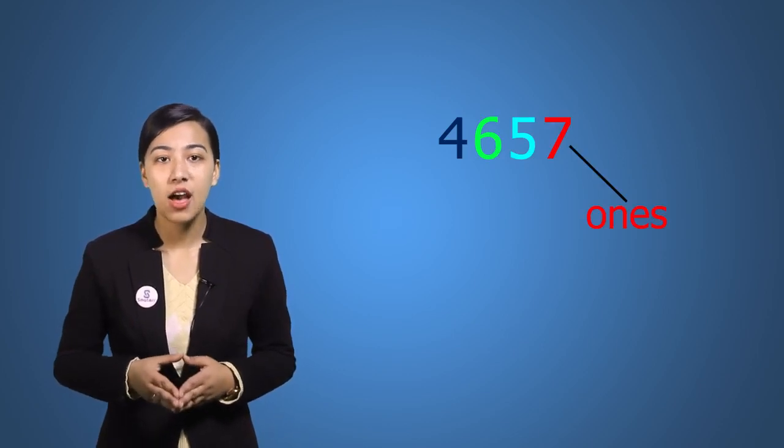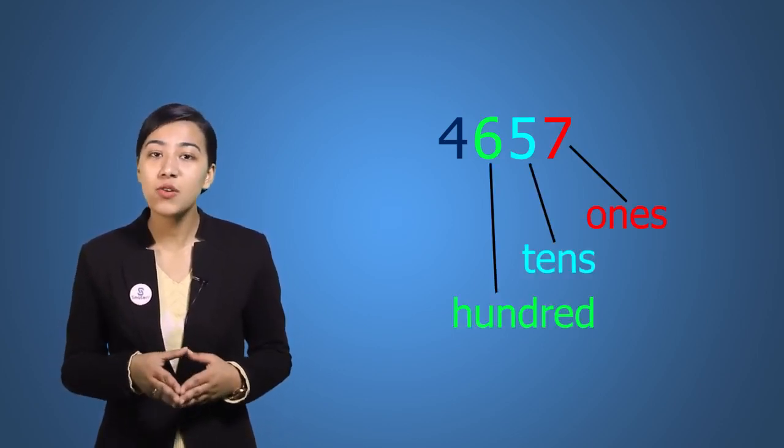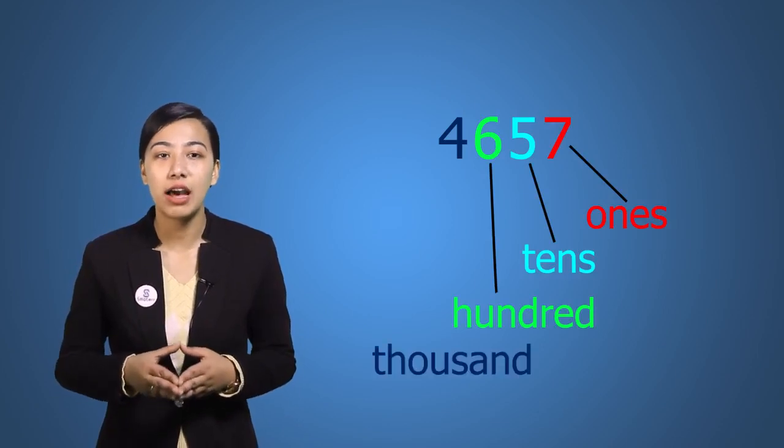The answer is simple — we use number places and separate those numbers using commas. Remember the number places? For example, in 4657: seven is in the ones place, five is in the tens place, six is in the hundreds place, and four is in the thousands place.